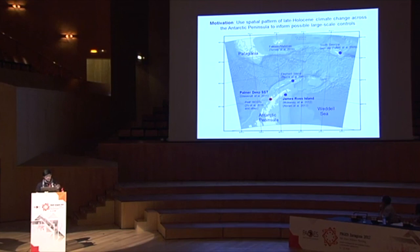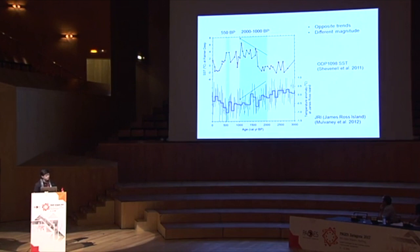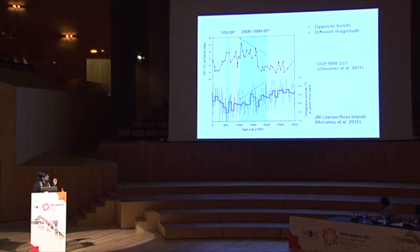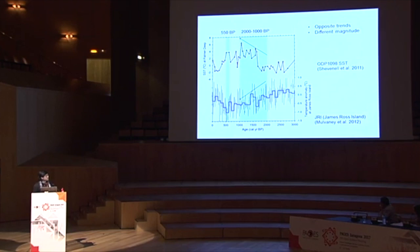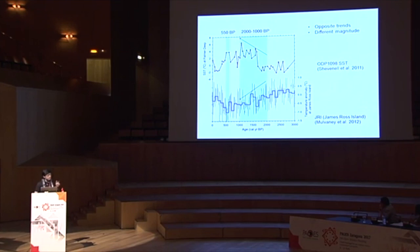Looking closely at two records from Palmer Deep over the last 3,000 years, from 2,000 to 1,000 years ago, Palmer Deep sea surface temperature shows an increase while James Ross Island on the east of the Antarctic Peninsula shows a decreasing trend. Around 500 years ago, there is a slight warming on the Western Antarctic Peninsula but cooling - the coldest interval - from the East Antarctic Peninsula. The magnitude is also very different: the Western Antarctic Peninsula shows changes up to 8 degrees C, while the East Antarctic Peninsula shows about 2 degrees.